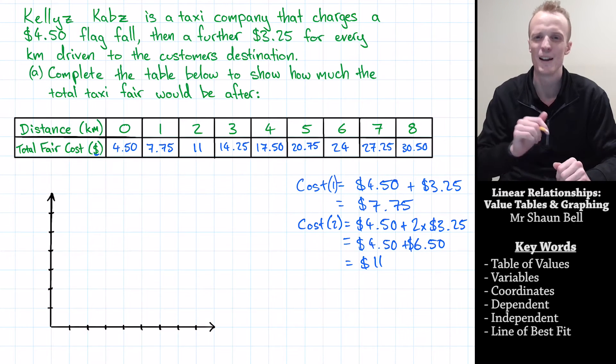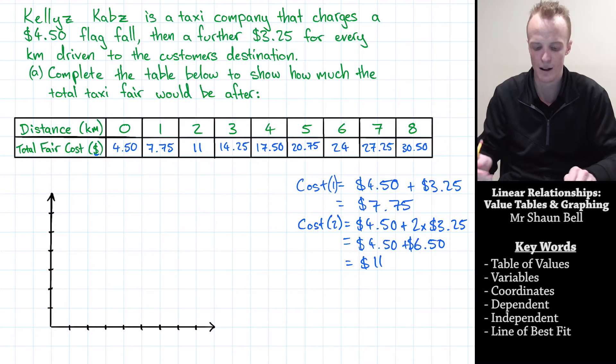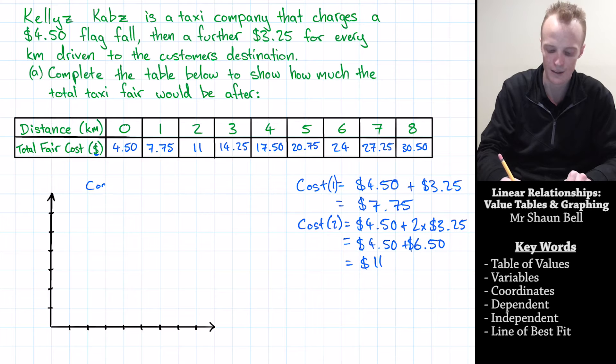So as you can see, I've now gone ahead and completed my table of values. So let's get on to graphing. Now every graph requires a few key components. The first thing every graph should have is a heading. Now I'm going to call my graph, Cost of Kelly's Cabs.